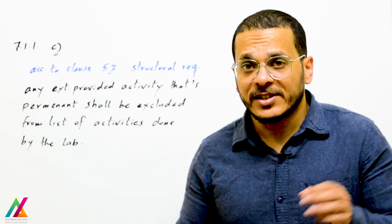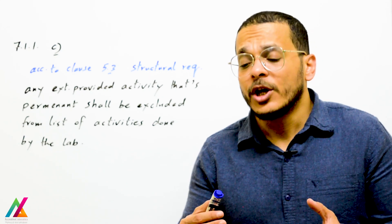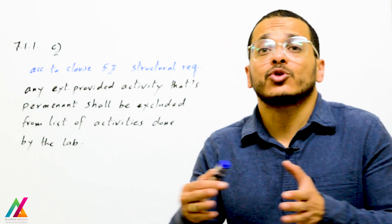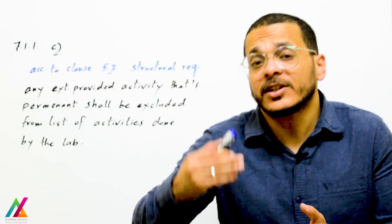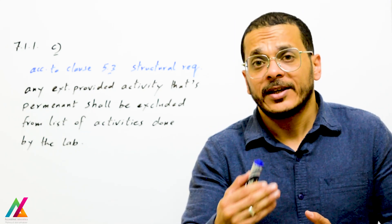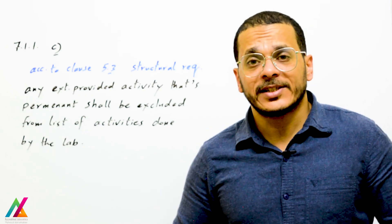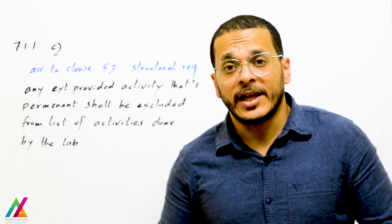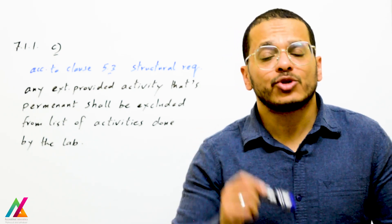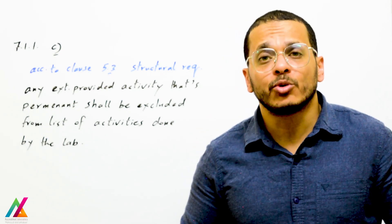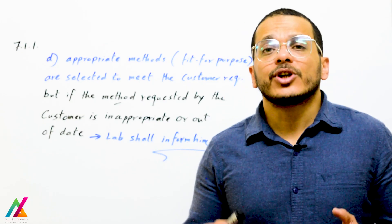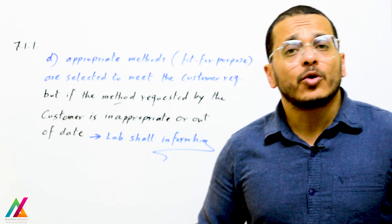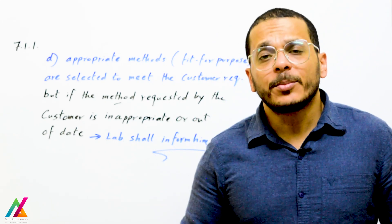If the subcontract is temporary — for unforeseen reasons you cannot get the required resources for some time but expect to be able to later — you shall make a temporary subcontract with the external provider and gain customer approval before doing so. The lab shall also use appropriate methods which are fit for purpose and shall evaluate the performance of these methods to ensure accurate and reliable results.